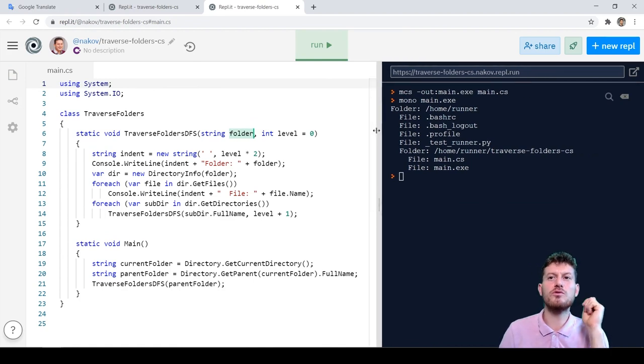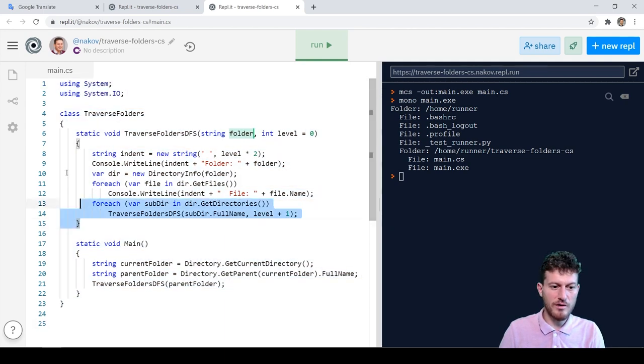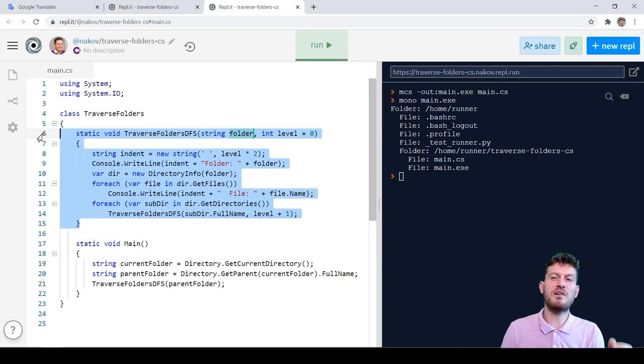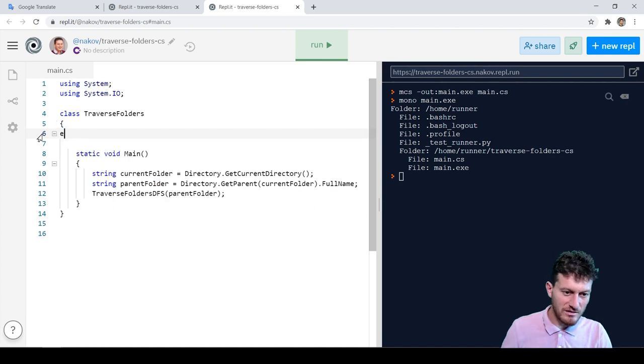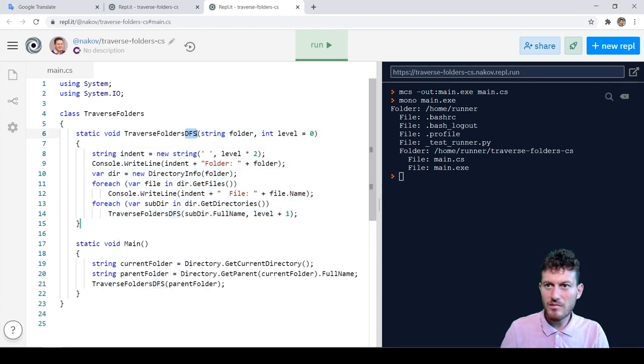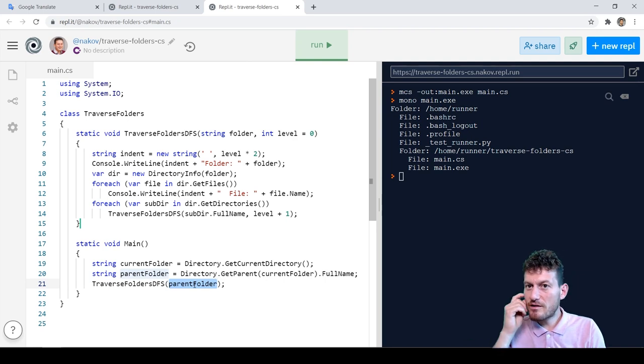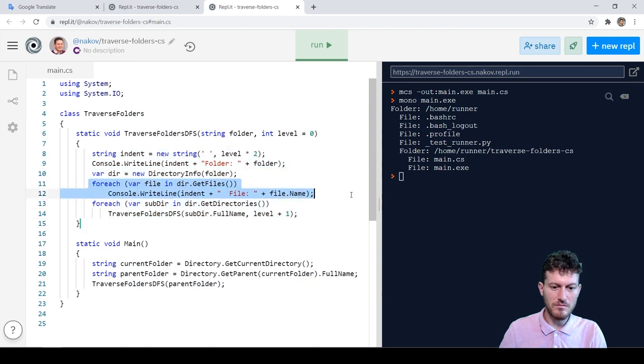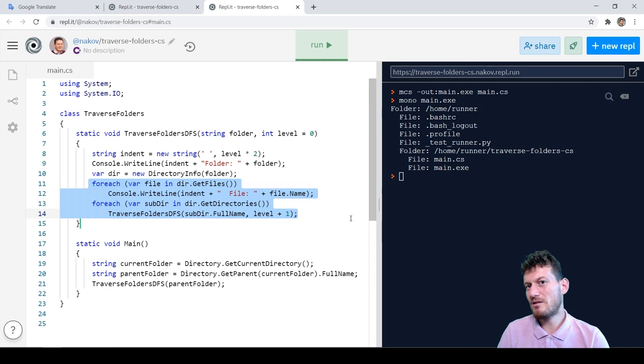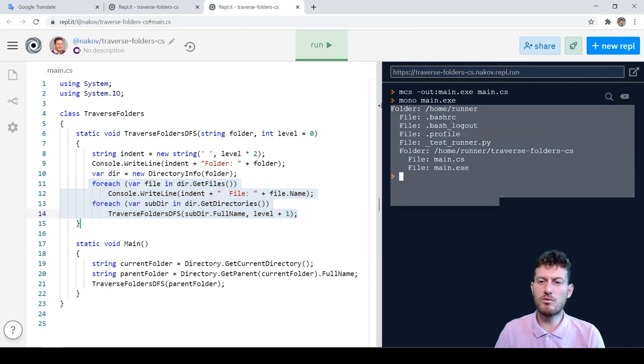Now we wait for it to load as usual. And we can see the source code of the example. The code is a little bit longer and a little bit more complicated than in the previous example, but essentially this is the DFS algorithm implemented in C-Sharp. The sample code starts the directory tree traversal from the parent of the current folder and traverses recursively the file system under this folder. Let's run the program.